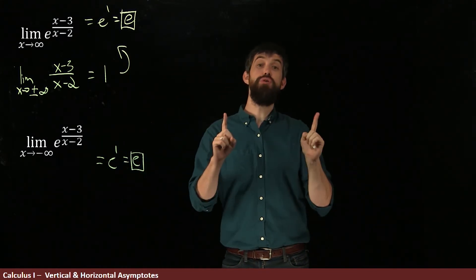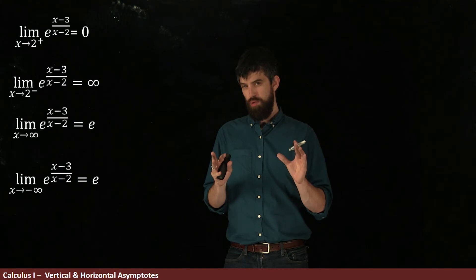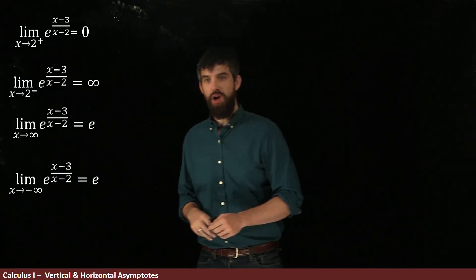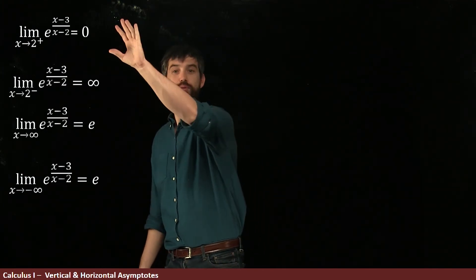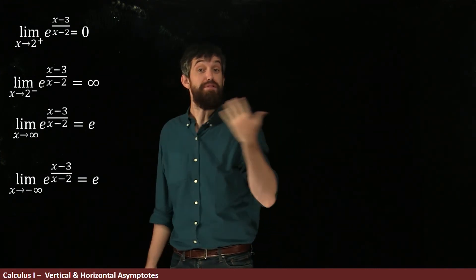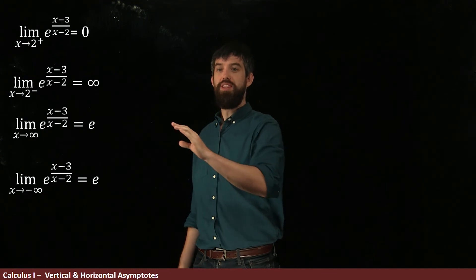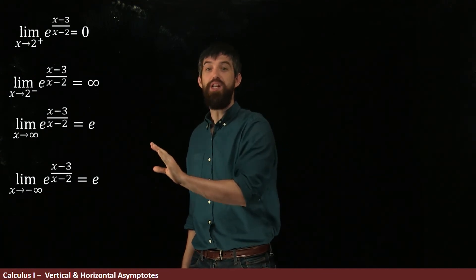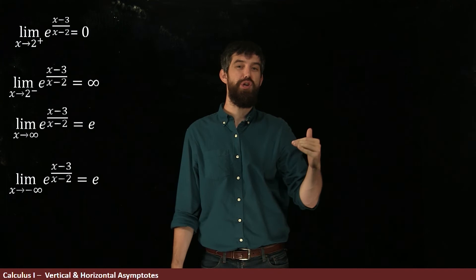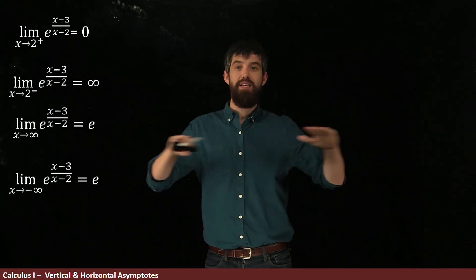So I've got these two horizontal asymptotes. Summarizing the four limits we've computed: when we took x approaching 2 from the right, it was the finite number 0. When approaching from the left, it was a vertical asymptote — infinity. Then for the horizontal asymptotes, either positive infinity or minus infinity gave the value e. So we have horizontal asymptotes at y equal to e.